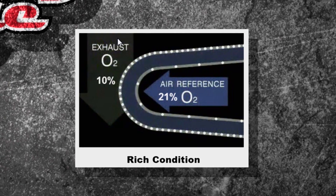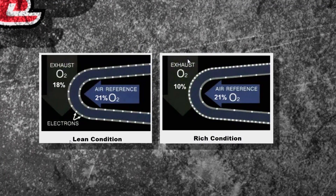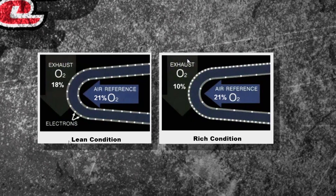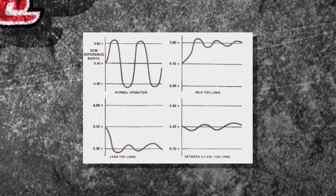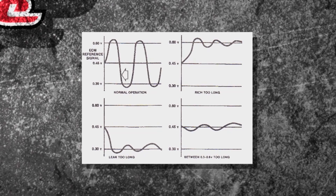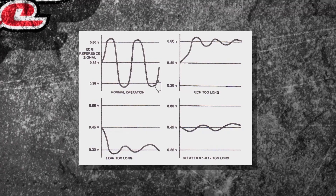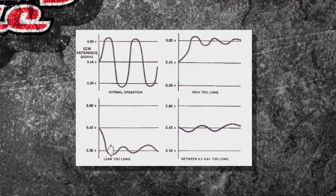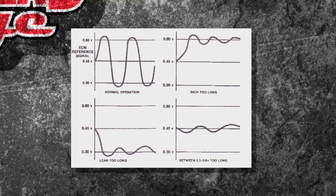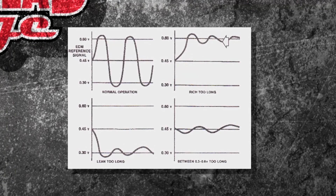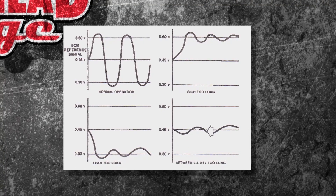If there's 21% oxygen outside and only 10% in the exhaust, that means there's a lot of fuel in the exhaust — that's a rich condition. The electron difference is much greater, creating higher voltage. You can see it going from high voltage to low voltage, crossing that threshold quickly — that's a good oxygen sensor. If it stays low too long it's lean; if it stays high too long it's rich.